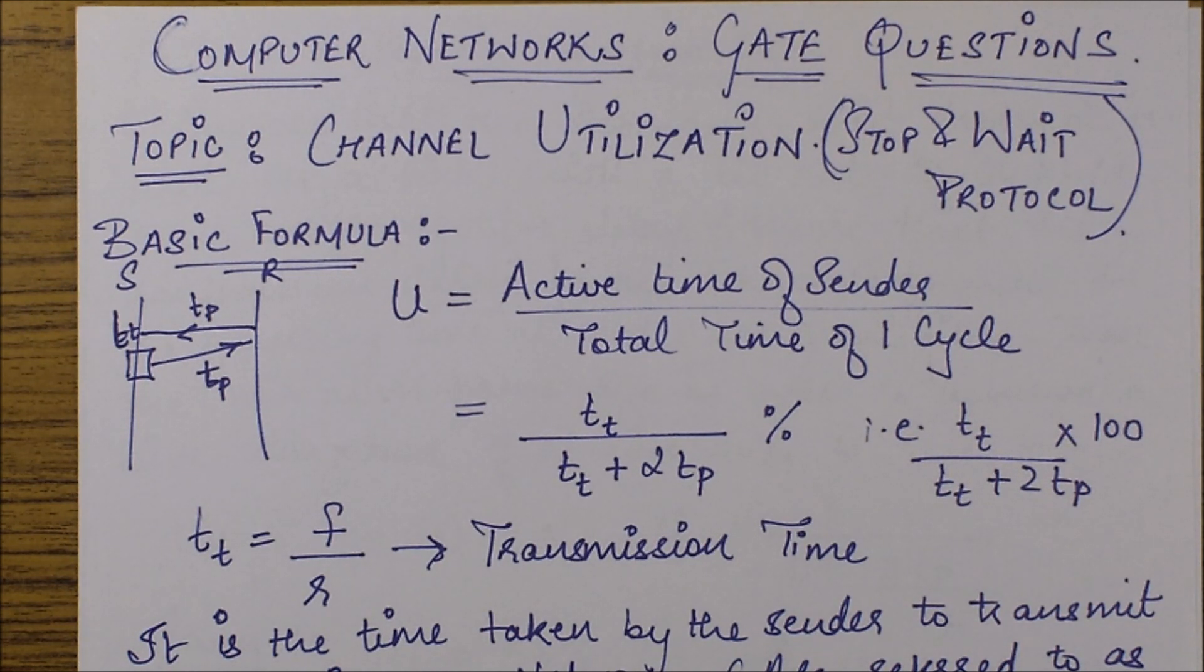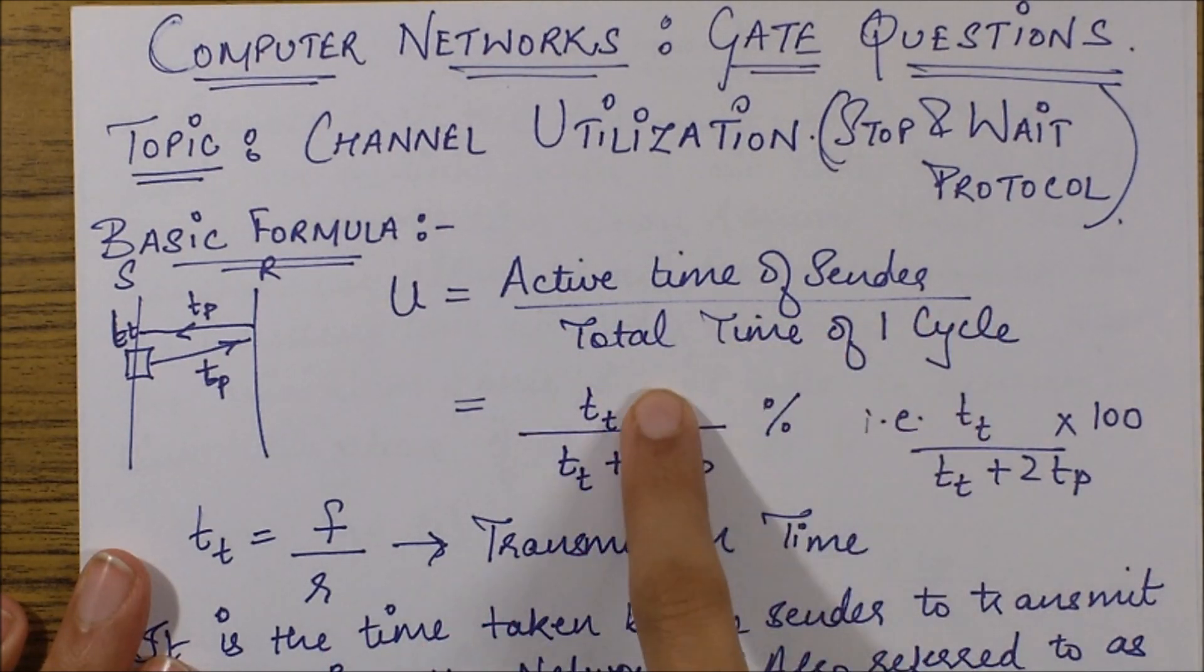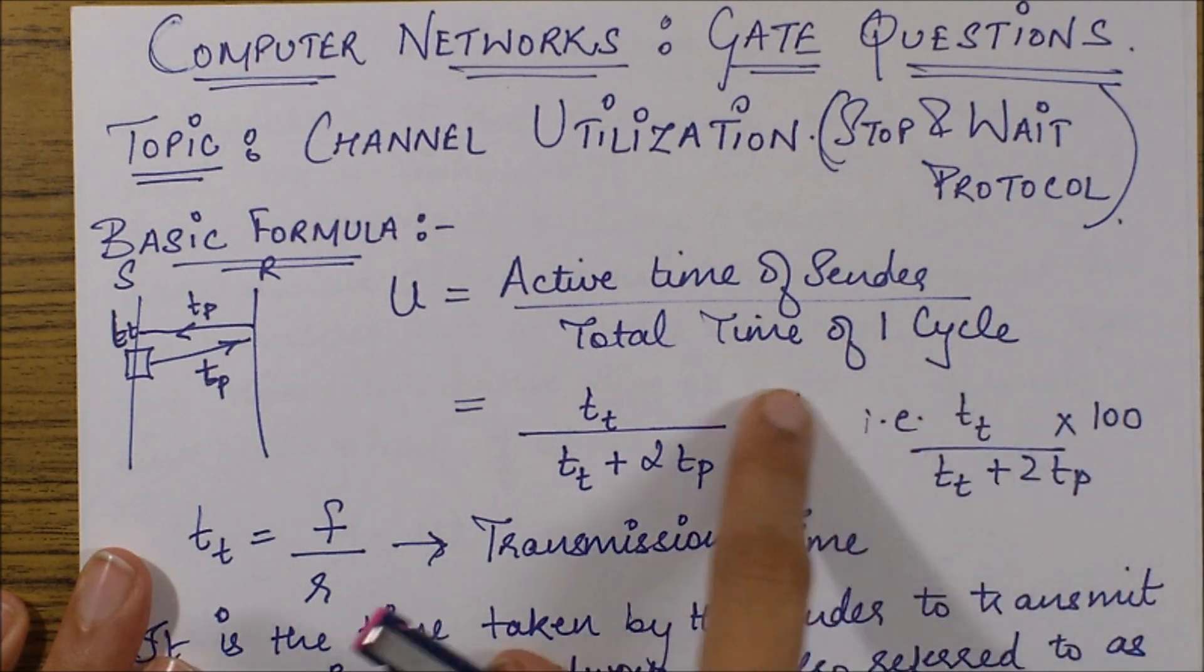The basic channel utilization formula is U equals active time of sender upon total time of one cycle. Now what do I mean by one cycle?